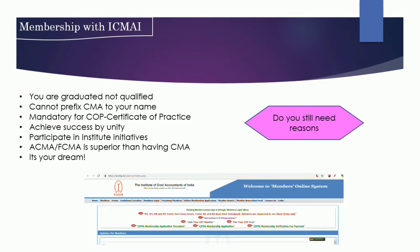You cannot prefix CMA to your name — as already mentioned — only if you have become an associate member can you add CMA before your name. Remember, CMA is just a degree. To become a superior professional you need ACMA or FCMA — that is Associate Cost and Management Accountant or Fellow Cost and Management Accountant. Those two are superior to the basic CMA qualification. You are qualified now, so you should be a professional — and to prefix that designation to your name, you need to enroll as a member.